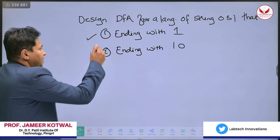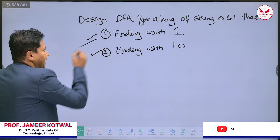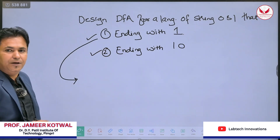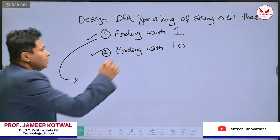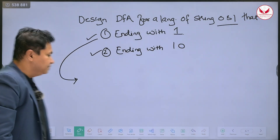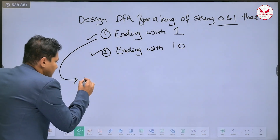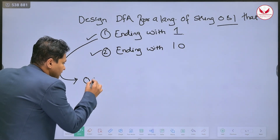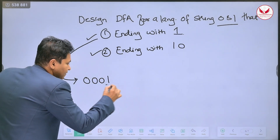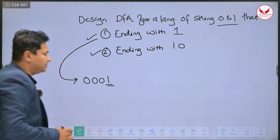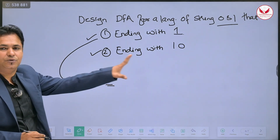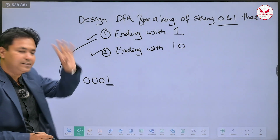When I say ending with 1, it means that the input you are going to process is 0 and 1. Say suppose 0, 0, 0, 1 — the string is ending with 1, meaning the machine should enter into the final state.